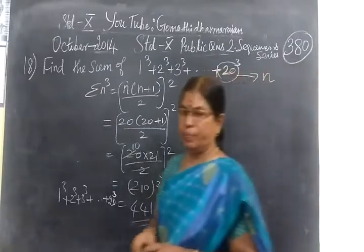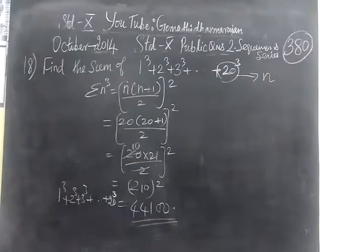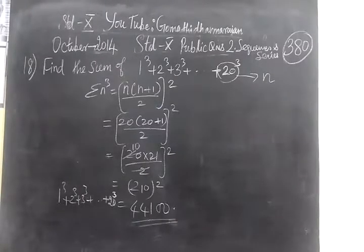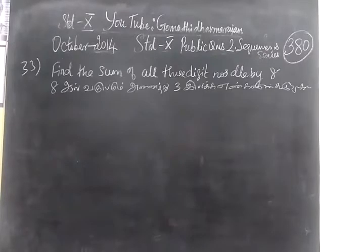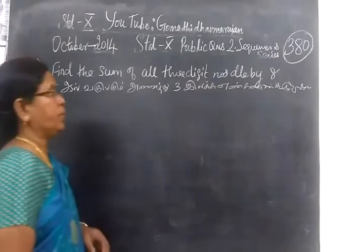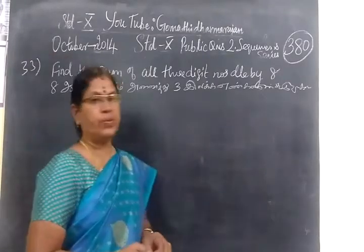And we do one more sum. Find the sum of all 3 digit numbers divisible by 8.